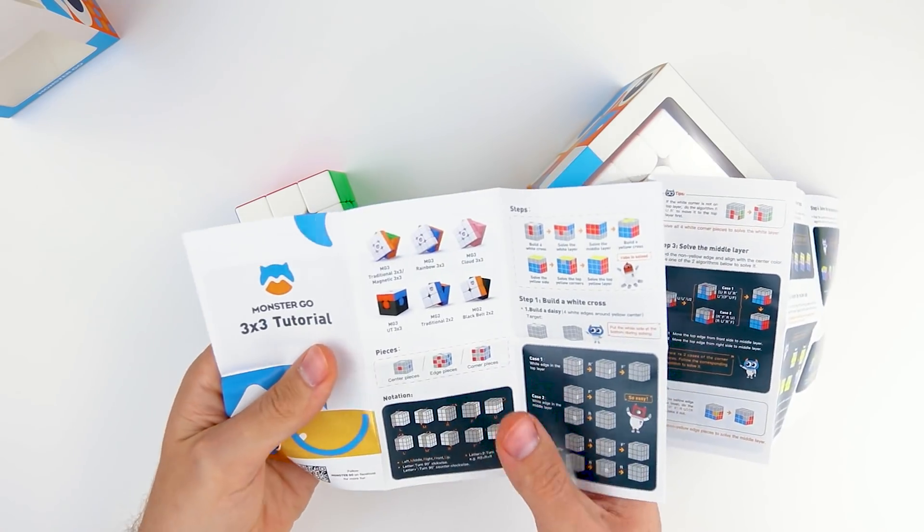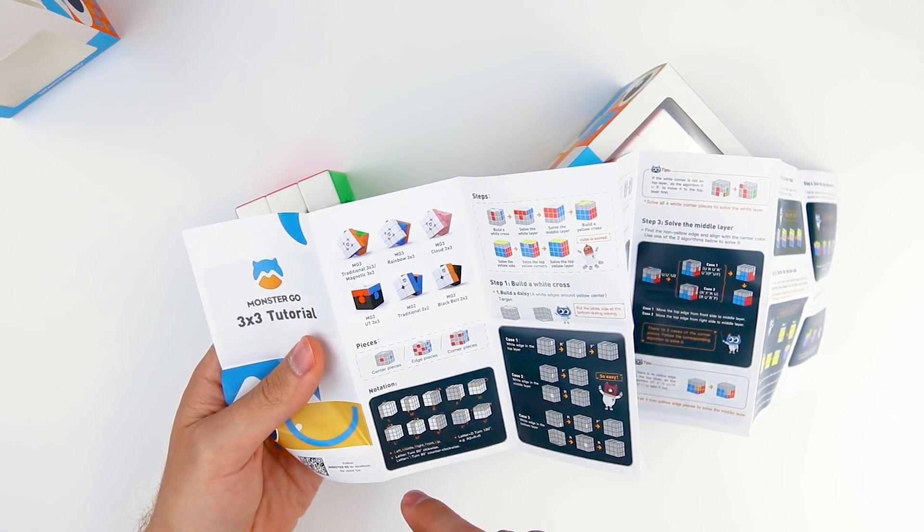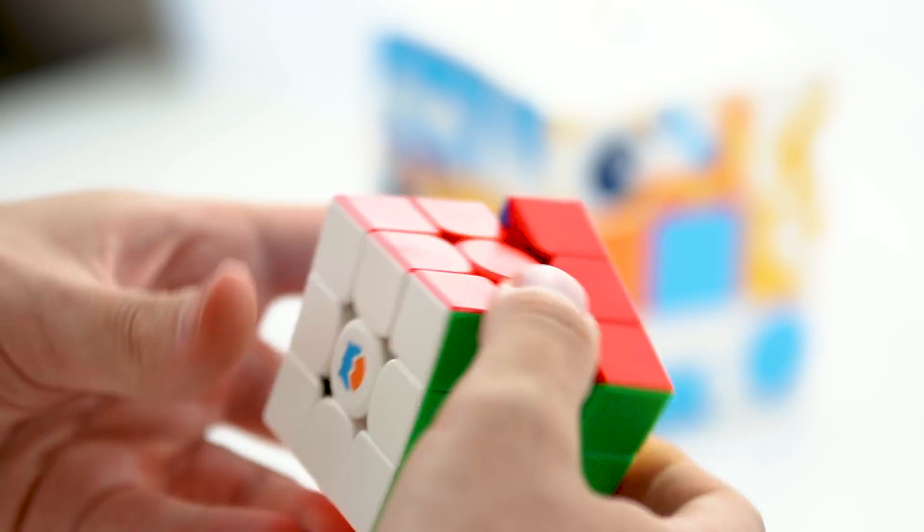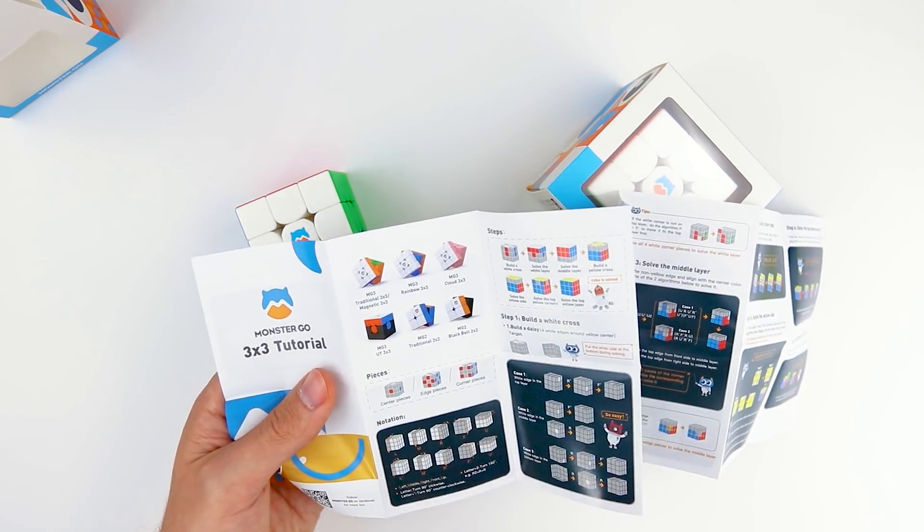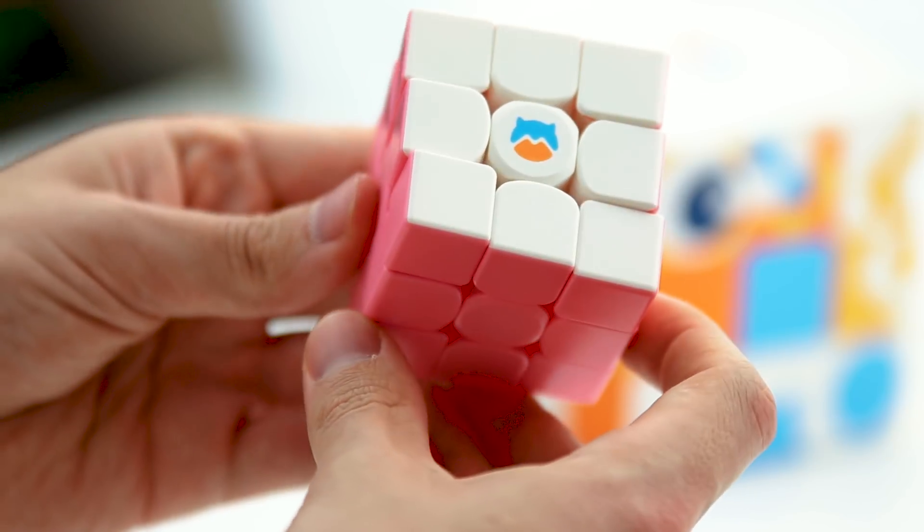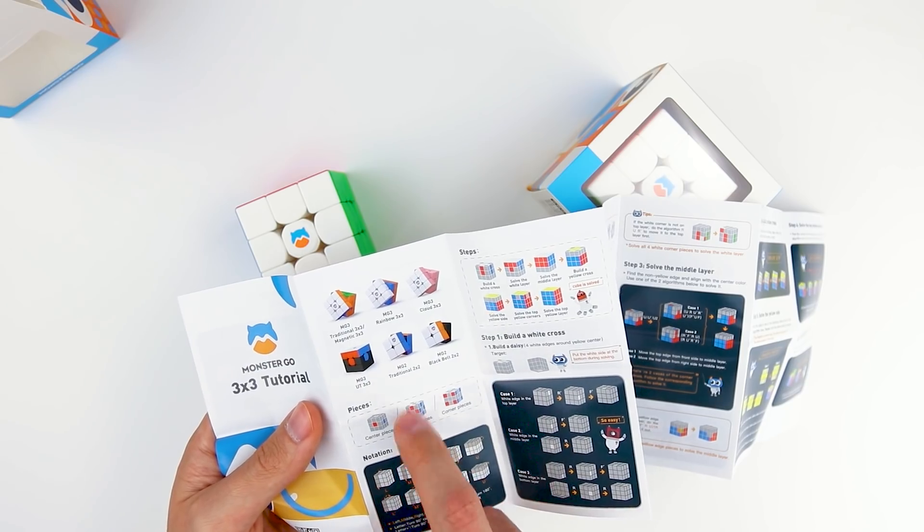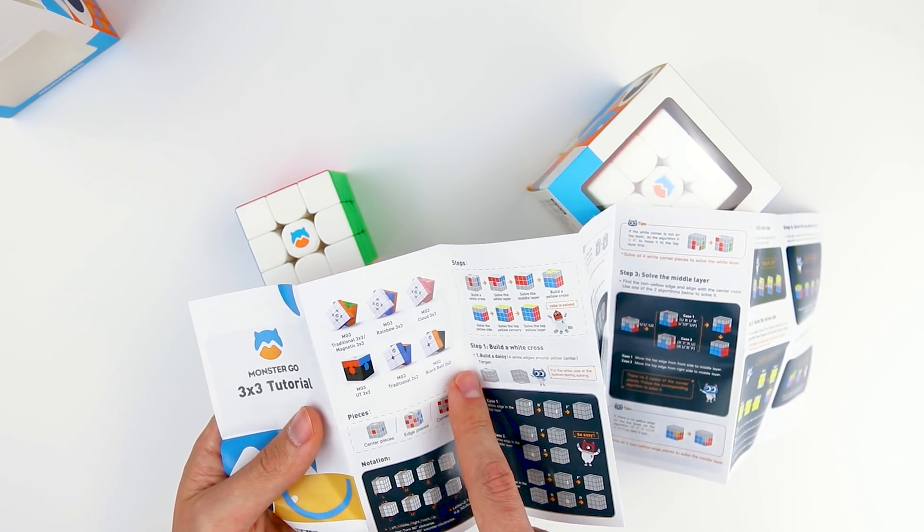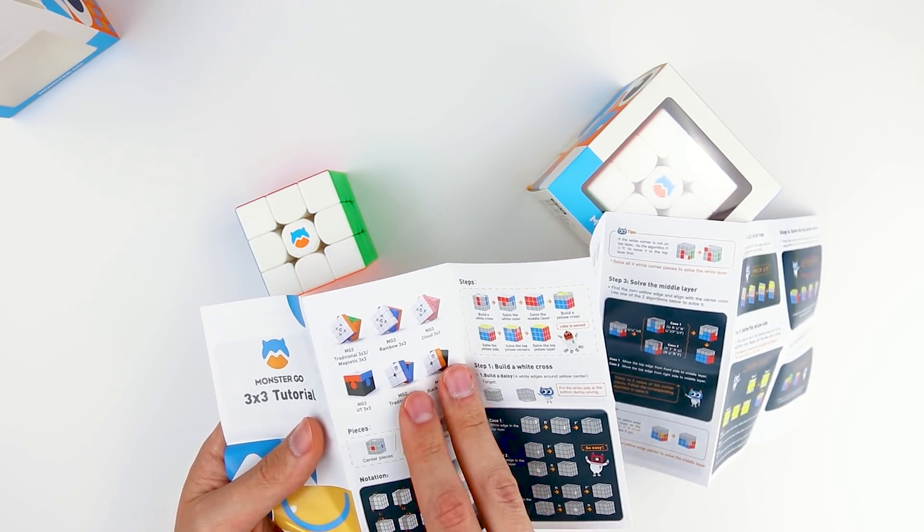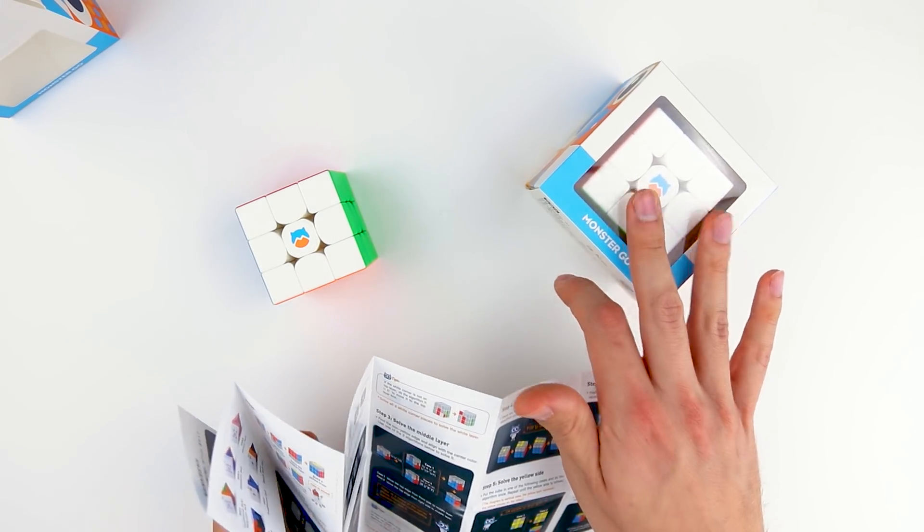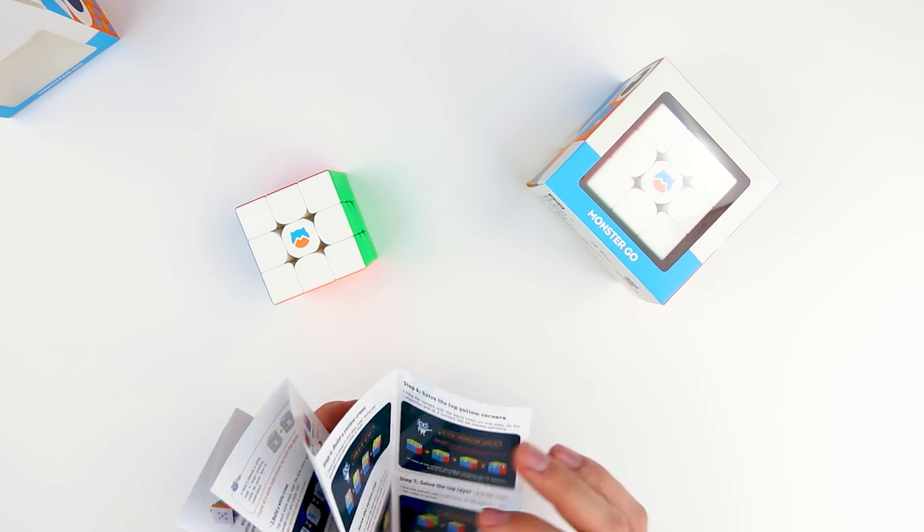In the beginning, you can see the whole collection. So we have the MG3, or MonsterGo 3x3, traditional 3x3, and magnetic 3x3, which are these two. Then we have the rainbow, cloud, and UT 3x3s, the MG2 traditional 2x2, and the black belt 2x2. Those two are not yet released, but will be coming pretty shortly after. These cubes are already in production, so they're going to be released like any day now.